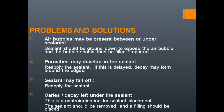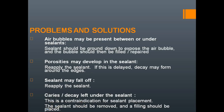Problems associated with pit and fissure sealants include air bubbles entrapped in the material and porosities that may develop. The sealant may fall off due to retention failure, requiring reapplication. If caries is left under the sealant, secondary caries will develop. In such cases, we should not place the sealant — instead, remove the caries and place a filling. Remember, a filling and a sealant are entirely different procedures.